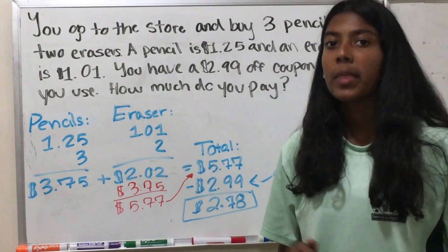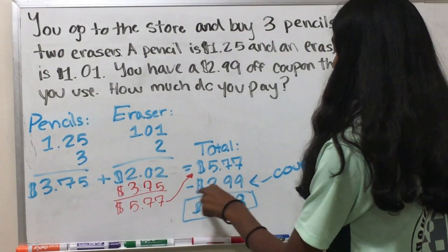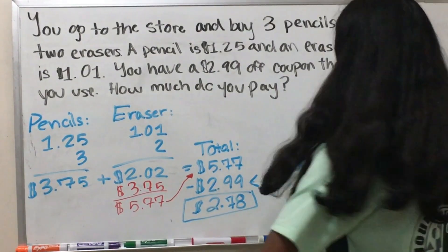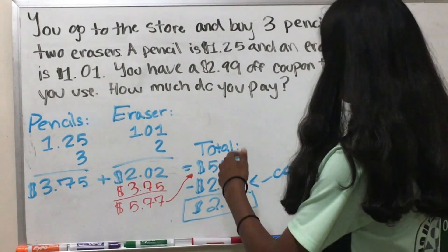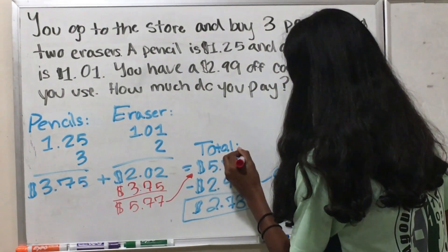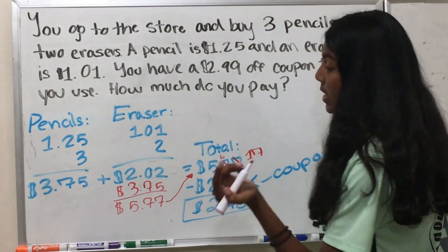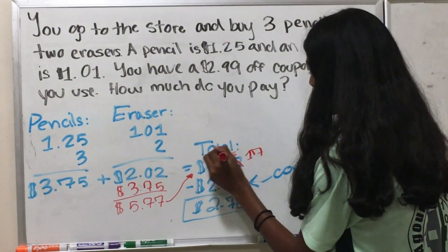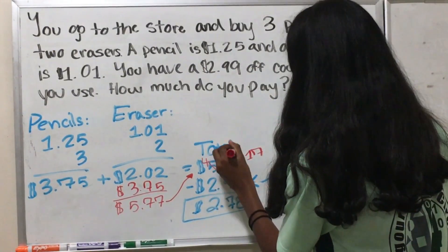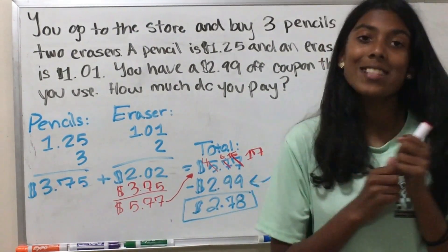That's how much we're paying so far. Now we apply the $2.99 off coupon, so we do $5.77 minus $2.99. We align the decimals, bring the decimal down, and subtract: 7 minus 9 can't be done, so we borrow — make that a 17 while making that a 6; 17 minus 9 is 8. 6 minus 9 is impossible, so borrow — make that 15 while making the next digit 4; 15 minus 9 is 6. 4 minus 2 is 2. And that's our answer: $2.78.